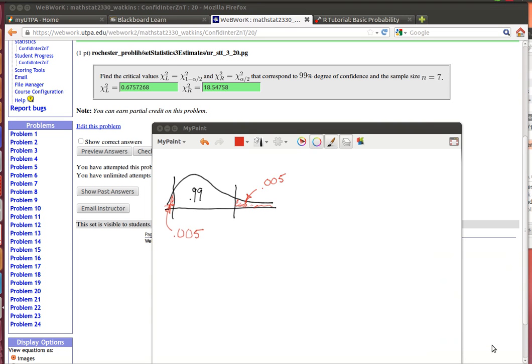This is problem 20 from the Webwork homework. We're looking for a distribution called a chi-squared distribution. It's an interesting distribution because it's not symmetrical. It's really skewed way to the right. The area under the curve is still 1 because it is a distribution.